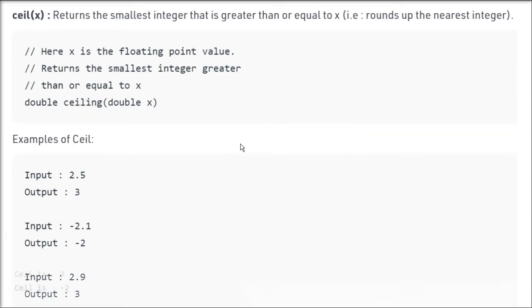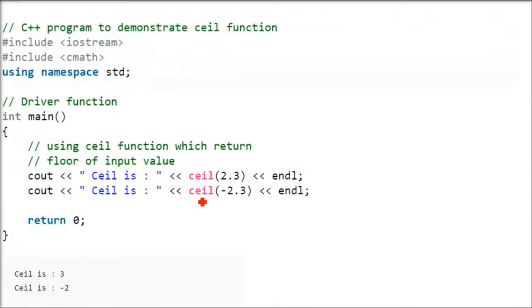So this you can use in C also, C++ also. This is an example. Now we are using ceil function here. We can convert it into C also, because this ceil function works in both of them. So endl is slash n. So 2.3 is between 3 and 2. Ceiling is the upper one. So it will be 3. Minus 2.3, it is between minus 2 and minus 3. So the ceiling will be the above value, which is minus 2.